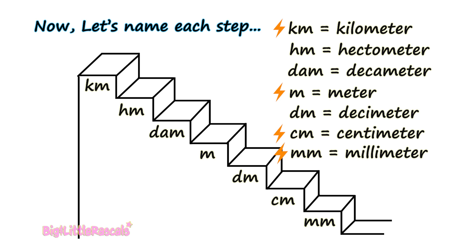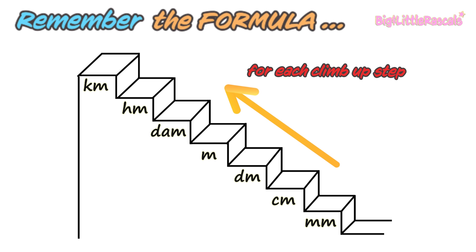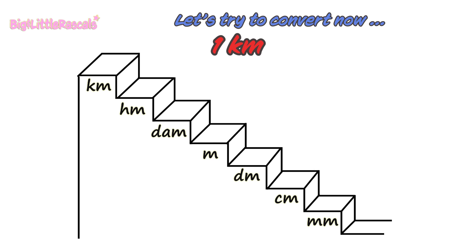In this stair, Km — the kilometer — is the biggest unit of measurement, while mm, the millimeter at the bottom, is the smallest unit of measurement. The most commonly used are kilometer, meter, centimeter, and millimeter. I have put a flash sign for them, and you don't really have to worry about the rest. Next, you need to remember the formula: for each step climbed up, you divide by 10; for each step climbed down, you multiply by 10.